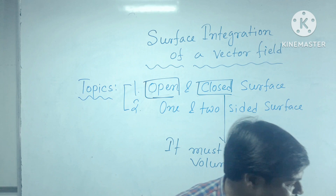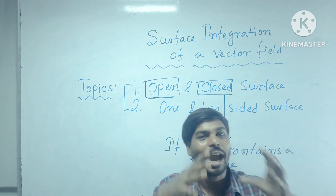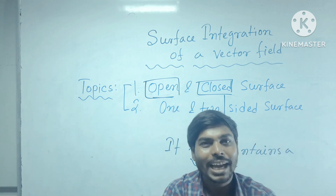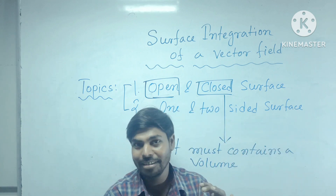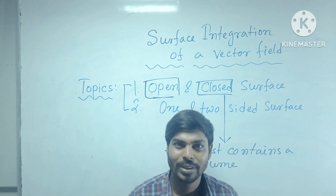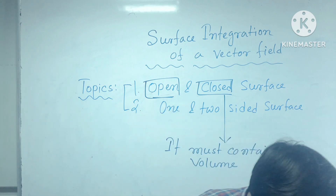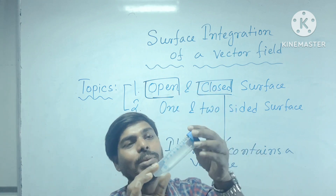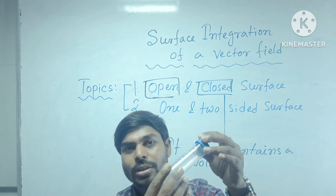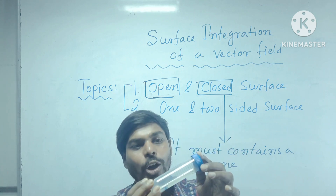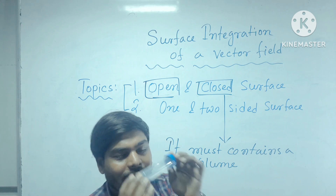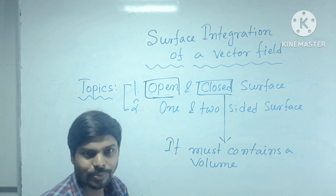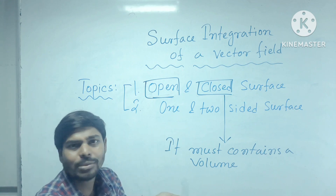Or you can think about a football — it is completely closed from every side and it contains air inside it. It is another example of the closed surface. Or consider this centrifuge tube — you can observe that it is completely closed and it also contains a volume. This is another example of closed surface. So these surfaces are the closed surfaces which contain a volume.